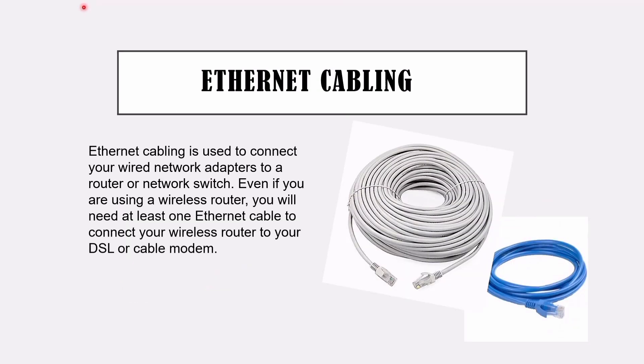Ethernet cabling — it looks like a wire. Ethernet cabling is used to connect your wired network adapters to a router or network switch. Even if you are using a wireless router, you will need at least one Ethernet cable to connect your wireless router to your DSL or cable modem. In our school, we are using the white Ethernet cabling, but you can also use the blue Ethernet cable.